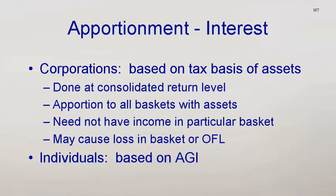Interest and research expenses must also be apportioned by a consolidated return group, as if all members of the group were a single corporation. Interest expense for other than individuals must be apportioned based on assets. The taxpayer's total interest expense is apportioned by the ratio of assets producing income in one relevant class, such as the foreign source general basket, to total assets.